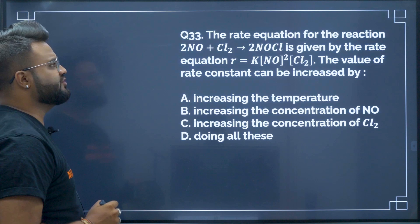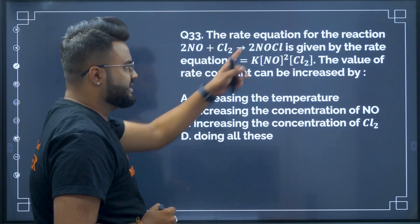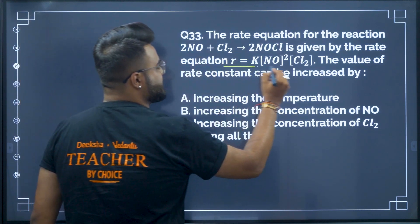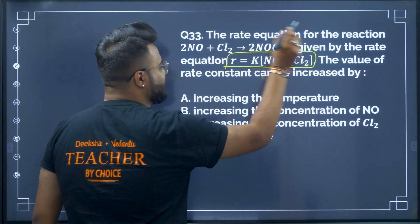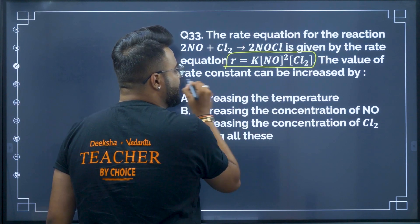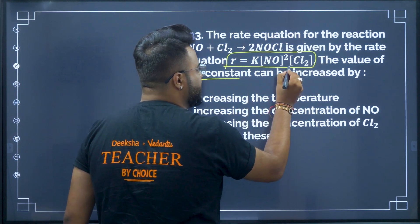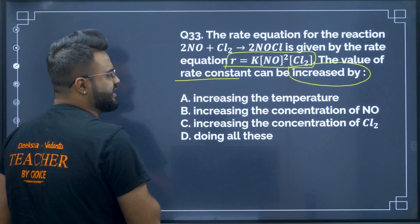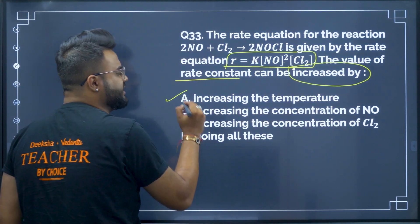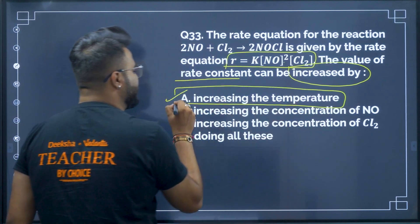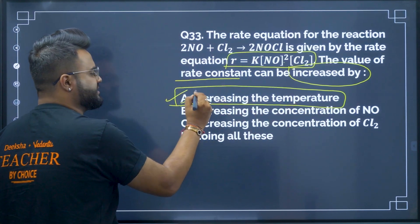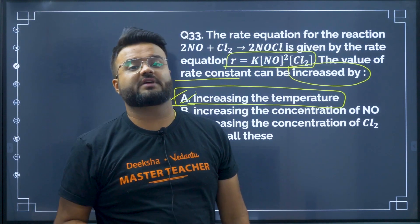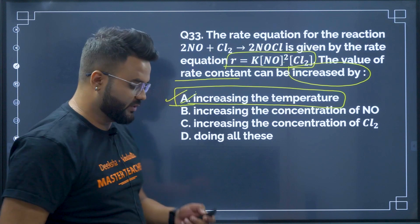Question number 33: the rate equation for the reaction is given by this rate law. The value of the rate constant can be increased — it is a first order reaction — by increasing the temperature. By increasing the temperature, we can increase the rate of the reaction as well.